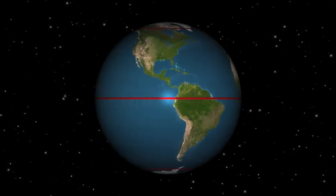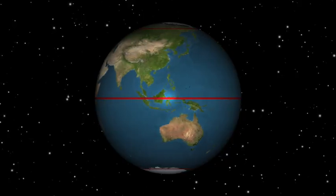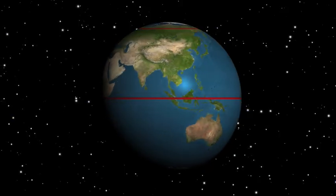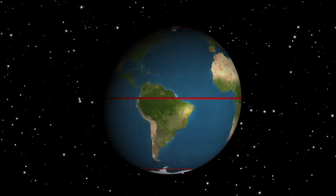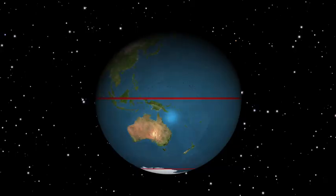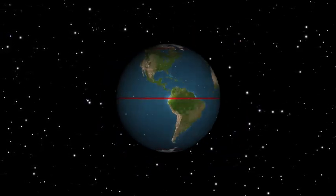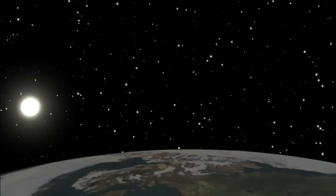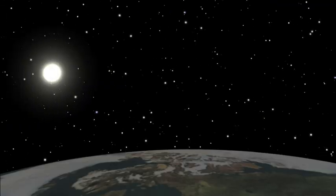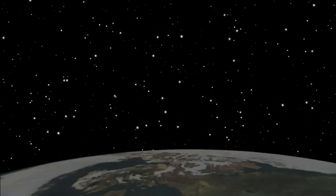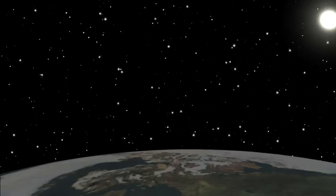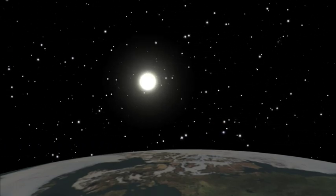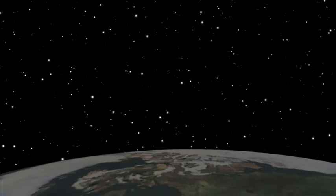At the equator, daytime and nighttime are equal to within a few minutes. But at distances north and south of the equator, the length of the day varies with the season, with the longest and shortest days being on the solstices. At the poles, once the Sun has risen, it stays up for six months before it sets again, and during the course of each day it travels in a complete circle around the edge of the sky.